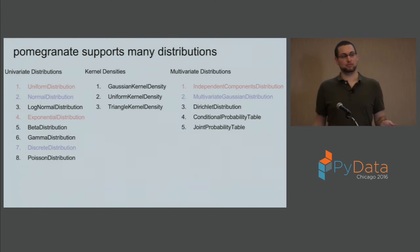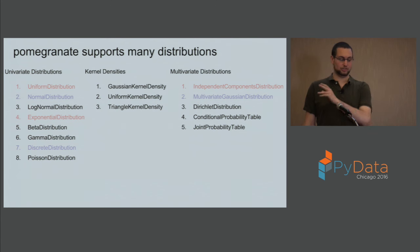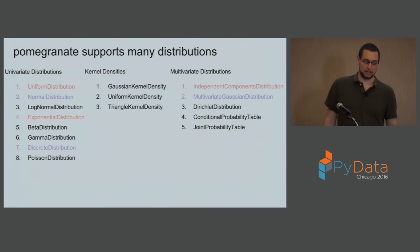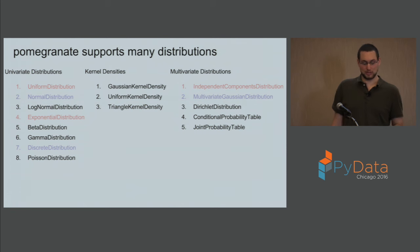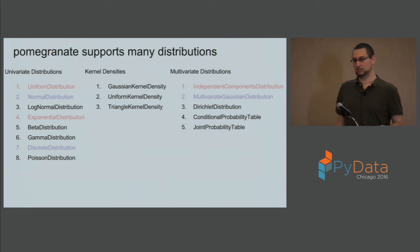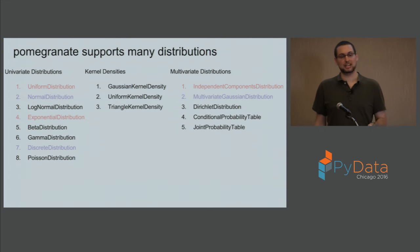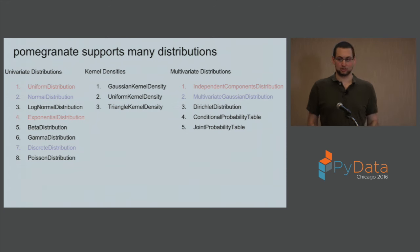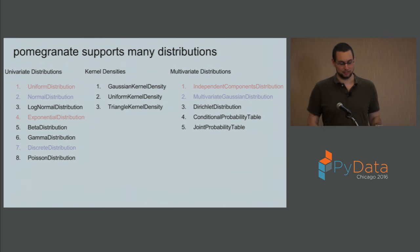Pomegranate supports a wide variety of distributions: univariate distributions, kernel densities, and multivariate distributions. In purple are the ones most people will use — normal distributions, multivariate Gaussians, and discrete. In red are distributions I personally like. This isn't the most interesting part of Pomegranate so I'm going to move on.